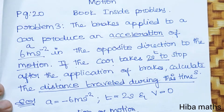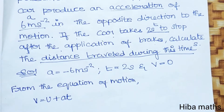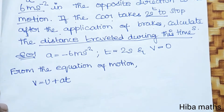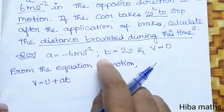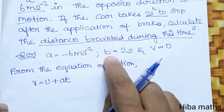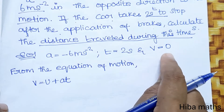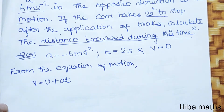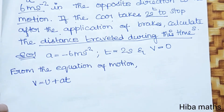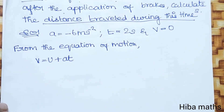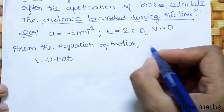Solution: The value of acceleration a is minus 6, t value is 2, and the final velocity v value is 0, because the car stops. So v is equal to 0.